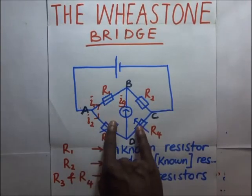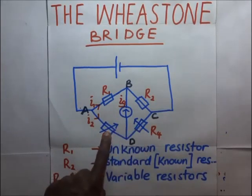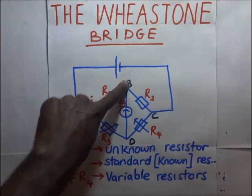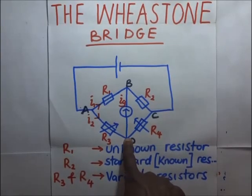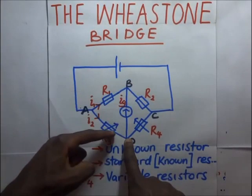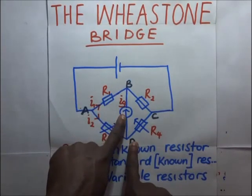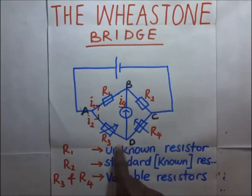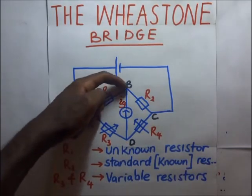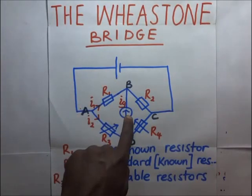When we vary the potential differences using these variable resistors, the potential at B and the potential at D will keep varying. If the potential at D is greater than at B, current will flow from D to B, causing the galvanometer to deflect. If the potential at B is greater, current flows from B to D through the galvanometer, causing it to deflect in the opposite direction.